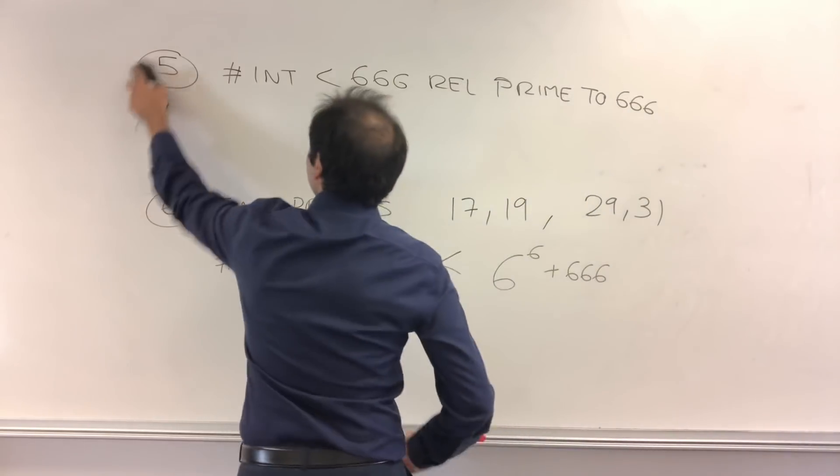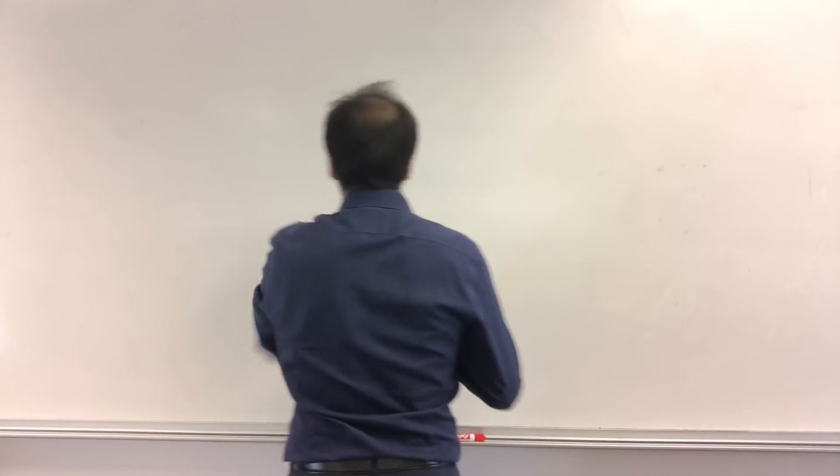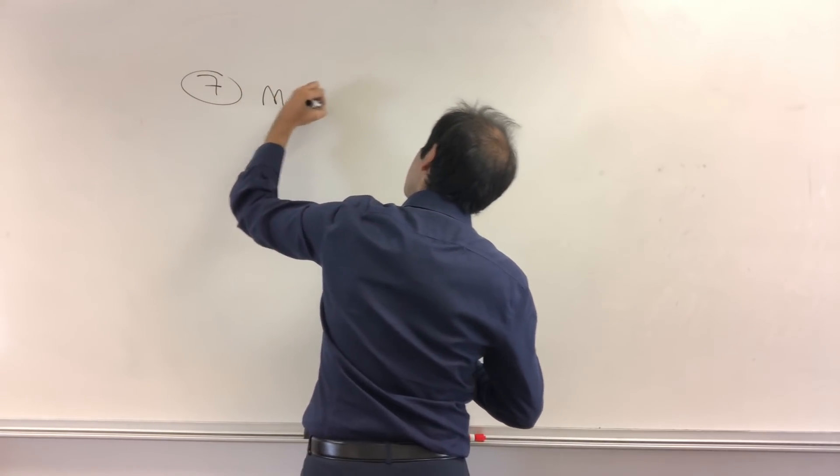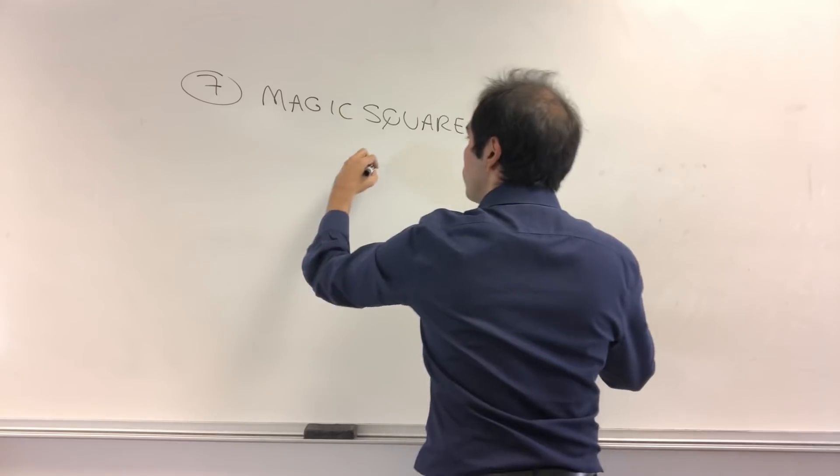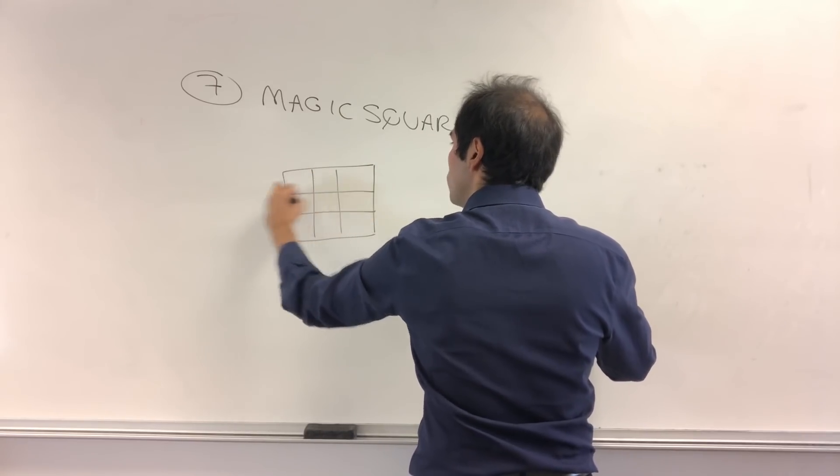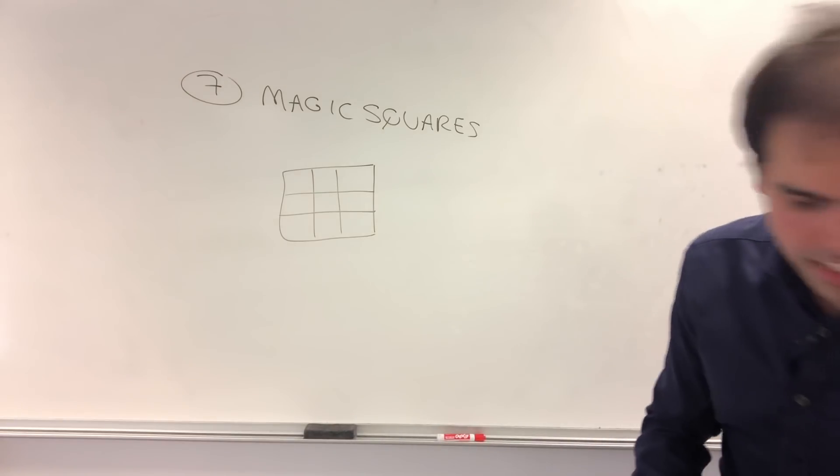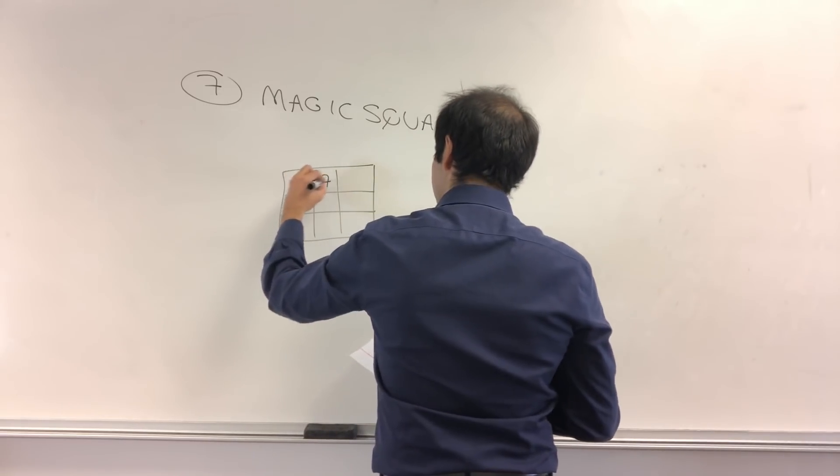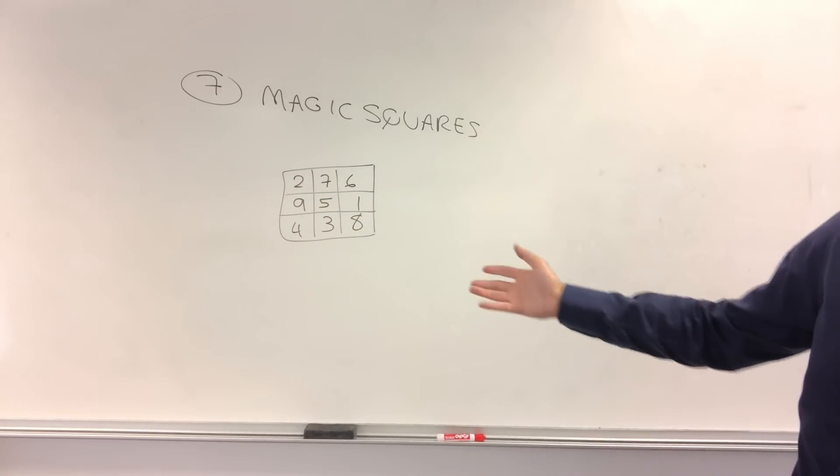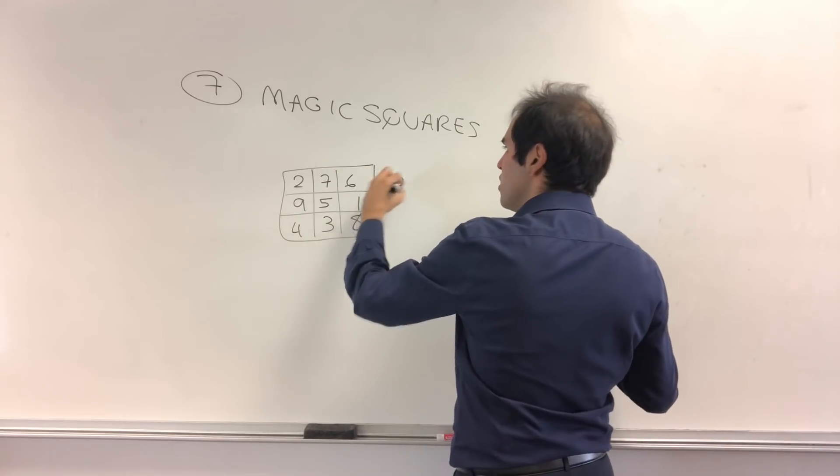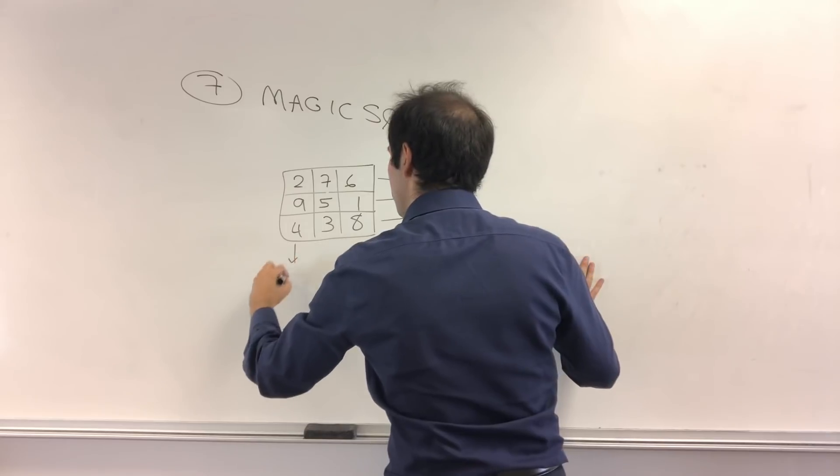And last but not least, maybe kind of a real-life application that I want to give you. So it turns out 666 also appears in magic squares. Magic squares. Speaking about magic. So what is, let's say, a 3 by 3 magic square? It's some square where you fill out the numbers 1 through 9, such that the sum of every column equals to the sum of every row. So a possible magic square would be 276, 951, and 438. Then, on the one hand, let's look at all the row and column sums. So here I believe the row sum is 15, this is 15, this is 15, and so is this, 15, 15, 15.